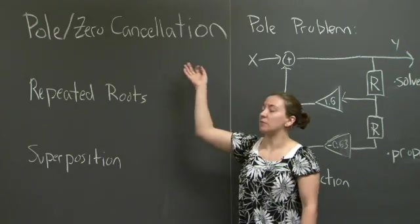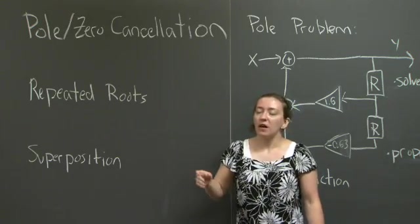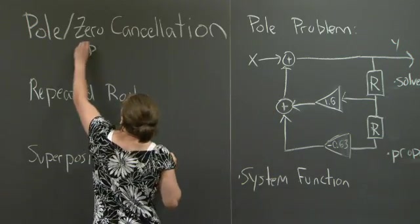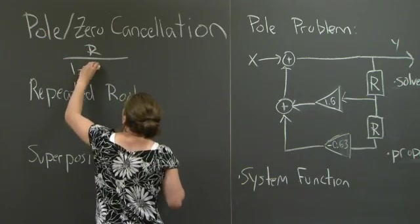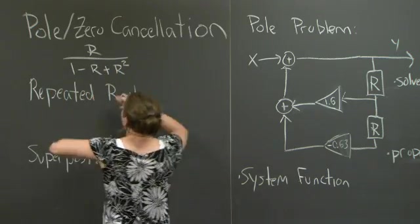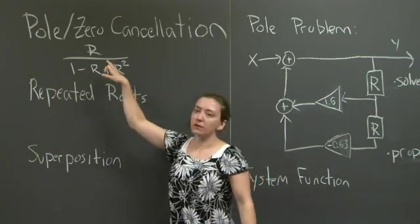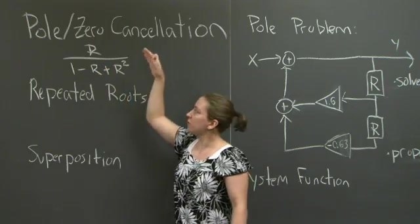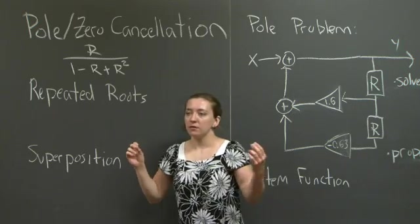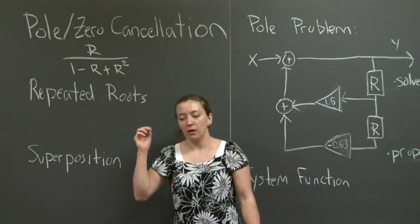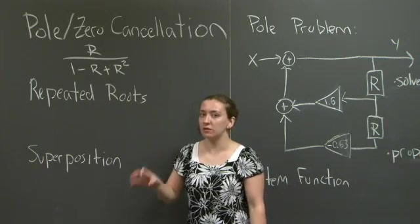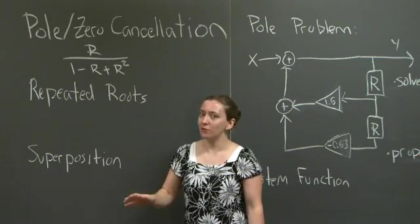The first thing that I want to mention is pole-zero cancellation. And what do I mean when I say that? I mean that if both the numerator and the denominator have a degree of r in them, then you're going to have both a zero and a pole. If the zero and the pole have the same value associated with them, you may be tempted to cancel them out. Unless both the zero and the pole are equal to zero, don't do it.